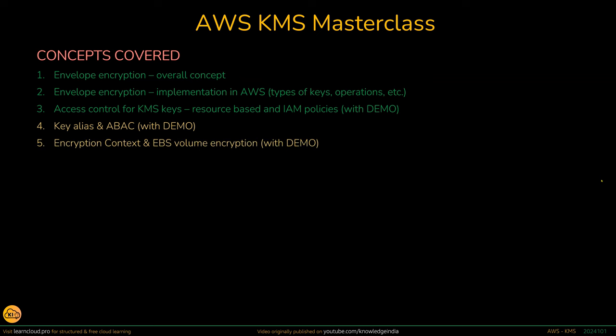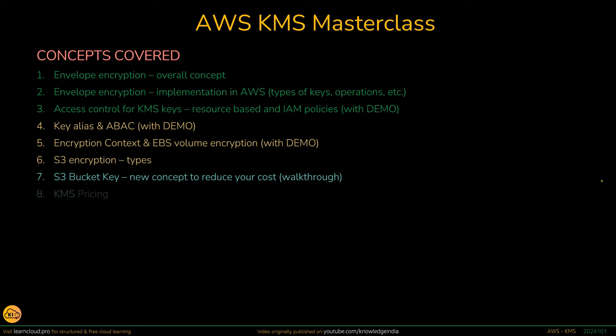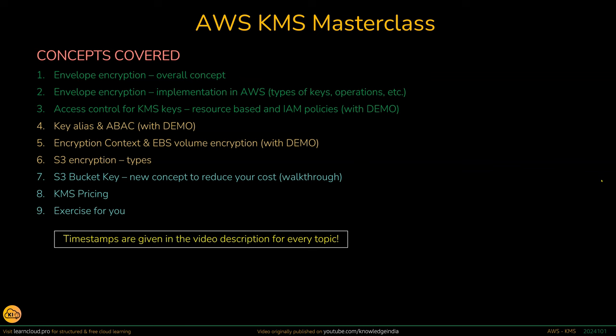After understanding different types of KMS keys, you need to understand the access control mechanism of KMS keys — how the KMS key policy works along with the IAM policies. We will discuss that in detail and then dive deeper with demos. Next, we will understand attribute-based access control via key alias and explore some tricky condition keys for your policies. Encryption context could be your friend when it comes to understanding the internals — that will be our fifth item. After that, we will pick up the AWS service that provides the maximum flavors of encryption: our old and rugged S3.